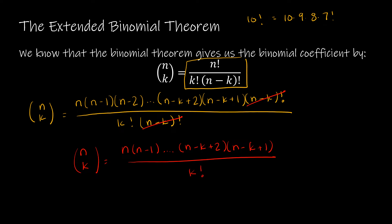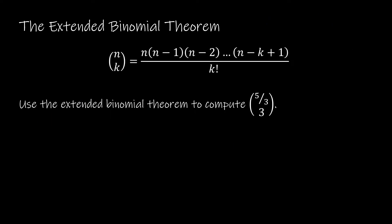You might think that's pointless, but it matters: in the original binomial theorem, n has to be a positive whole number. In the extended binomial theorem, n can be a fraction or even a negative number. So let's take a look at the extended binomial theorem with a fraction.